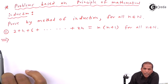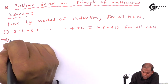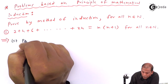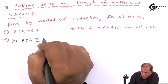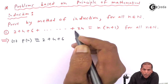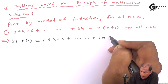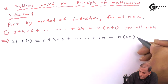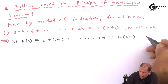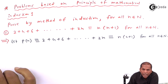Now let's see the solution. First of all, let P denote the statement that 2 plus 4 plus 6 dot dot upto 2n is equal to n(n plus 1), for all n belonging to the set of natural numbers.